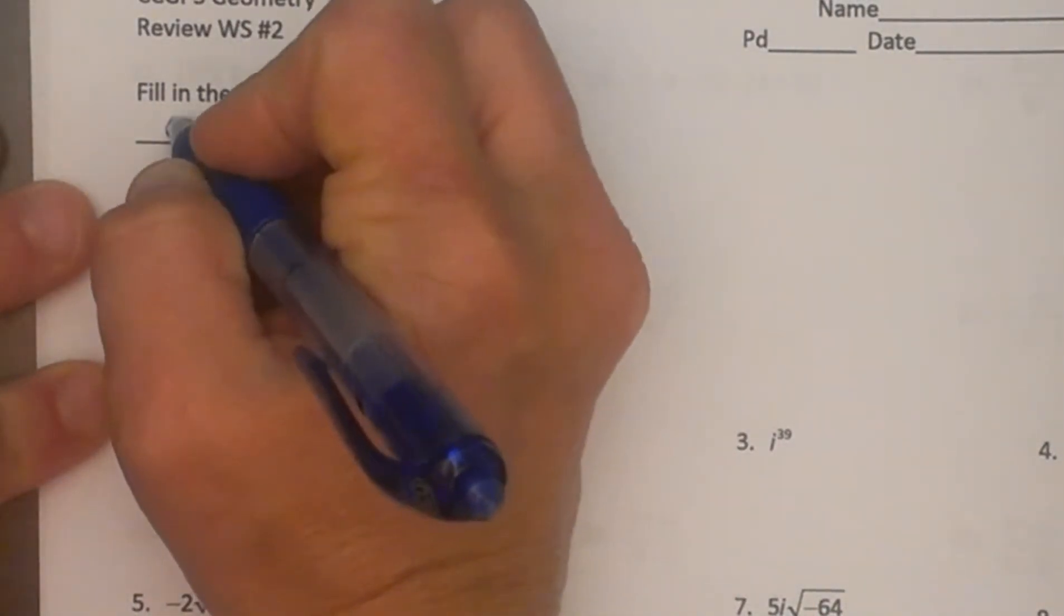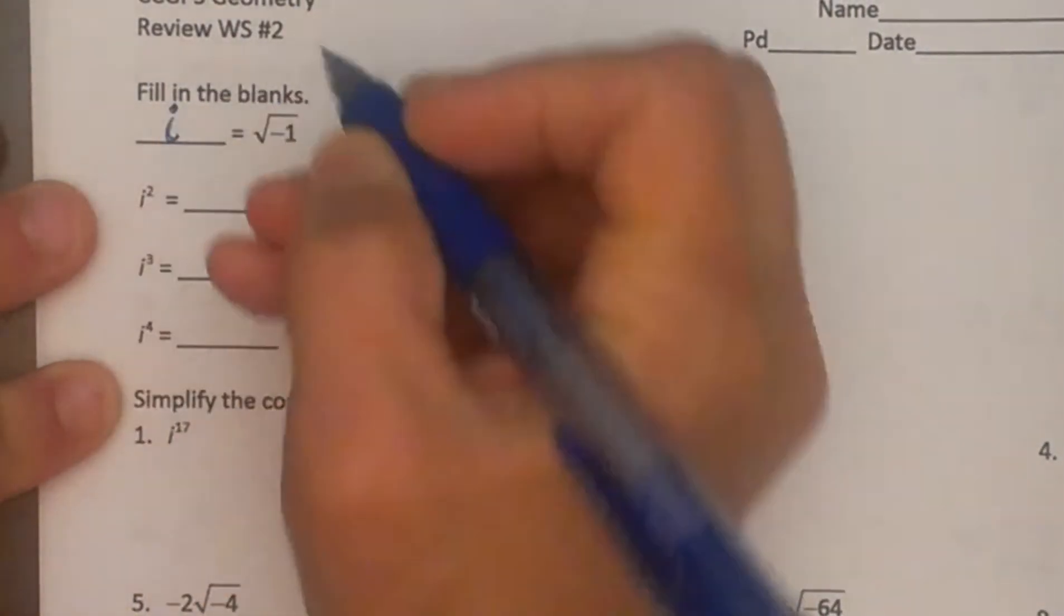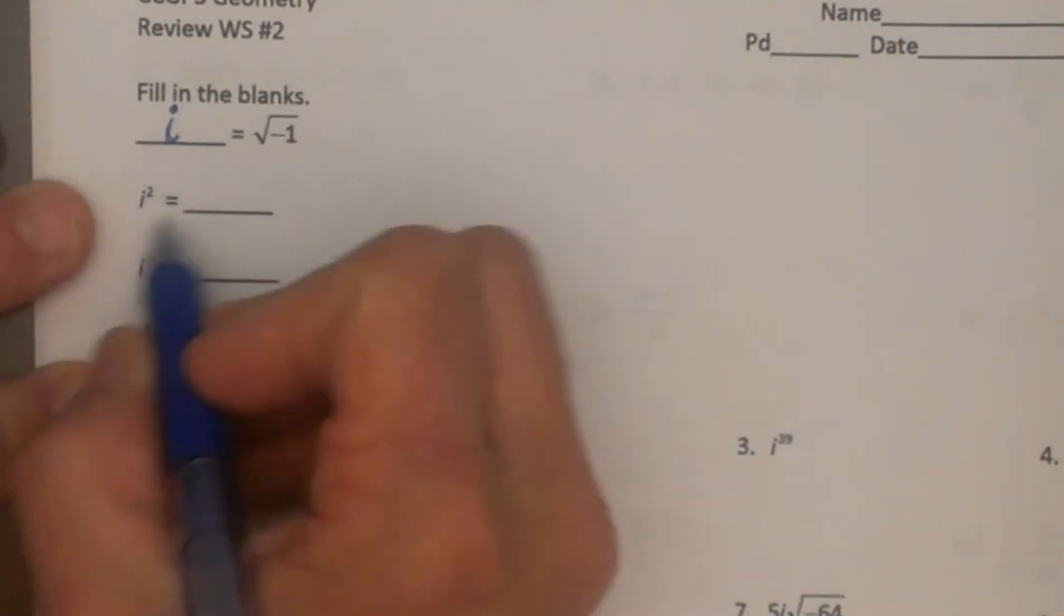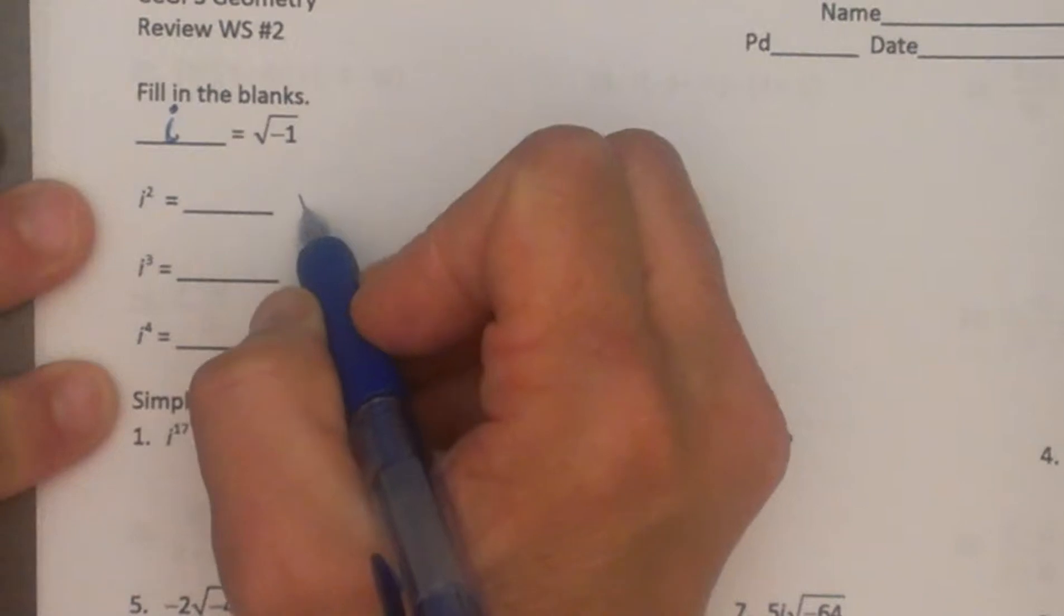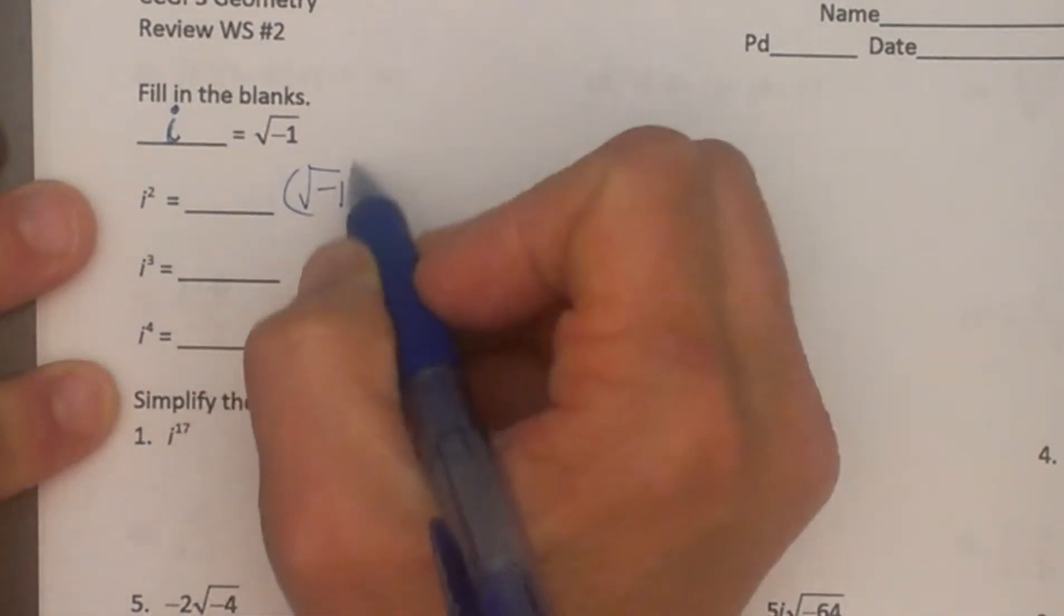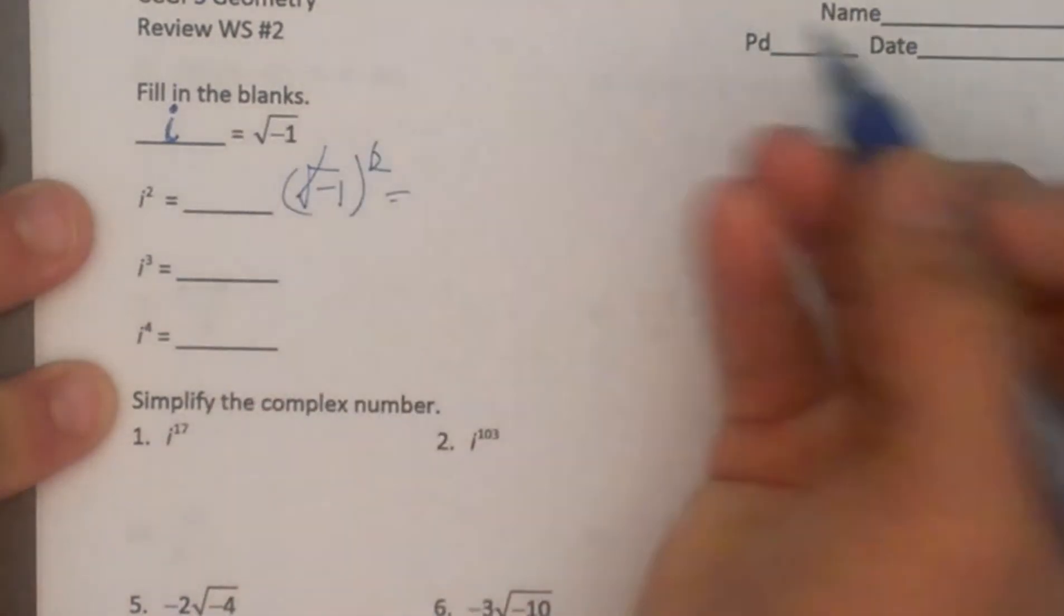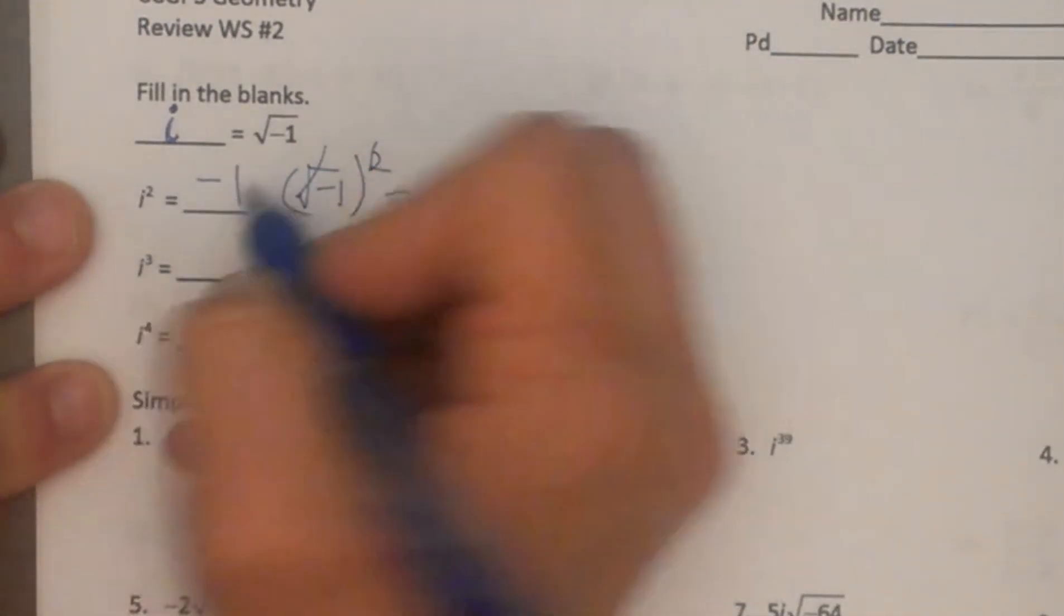We are going to put i, and I'm not going to put to the first power because we just assume that. So i is equal to the square root of negative one. But i squared is equal to negative one squared. When you square a square root they are opposite operations, so we just get out a negative one.